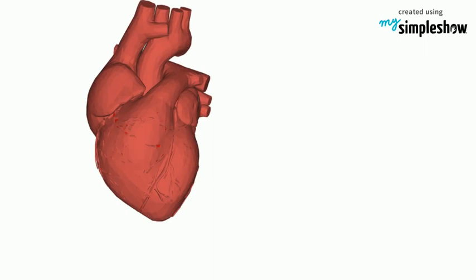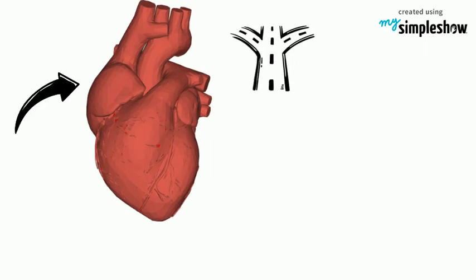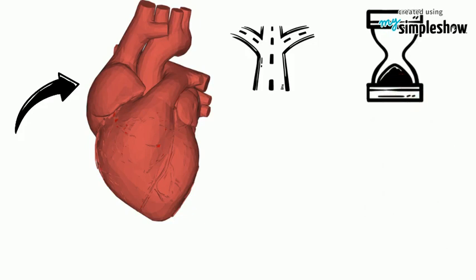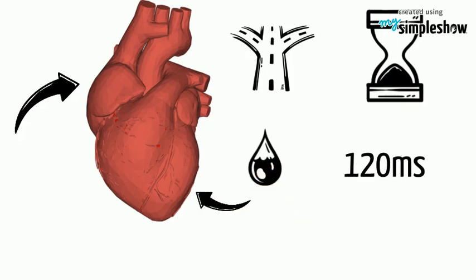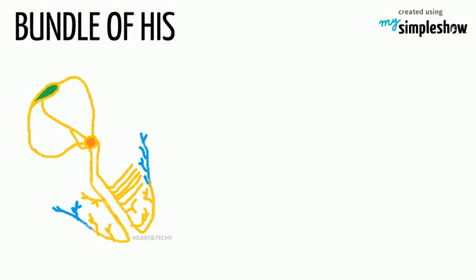After the electrical impulse is spread across the atria, the impulses converge at the atrioventricular node, located within the atrioventricular septum near the opening of the coronary sinus. The AV node acts to delay the impulses by approximately 120 milliseconds, to ensure the atria have enough time to fully eject blood into the ventricles before ventricular systole.